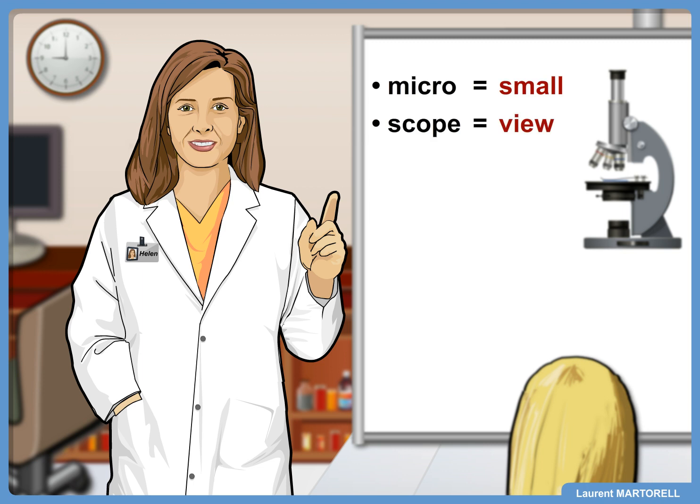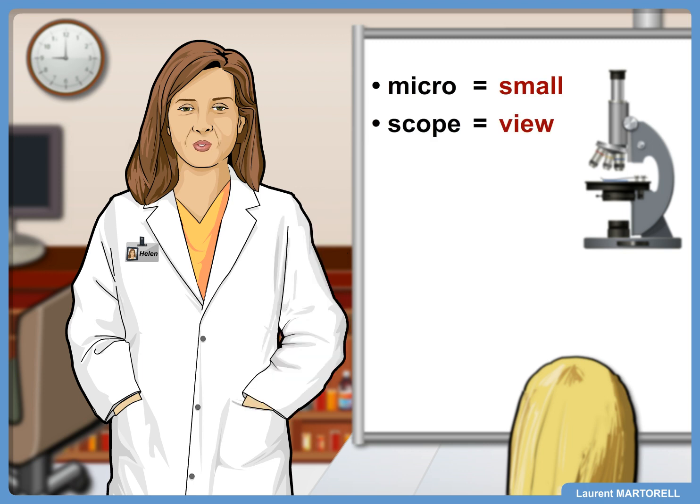First, you should know that 'micro' means small and 'scope' means view. So microscope means viewing small objects that the human eye cannot normally observe alone.